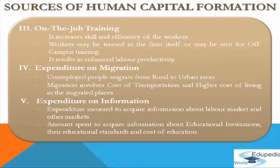The third source is on-the-job training. Productivity of physical capital is substantially enhanced with the improvement in human capital. Due to this reason many firms provide on-the-job training to their workers. Such training has the advantage that it can be provided fast and without much cost. It increases the skill and efficiency of workers and leads to an increase in production and productivity. On-the-job training may take different forms: a worker may be trained in the firm itself under the supervision of skilled workers.